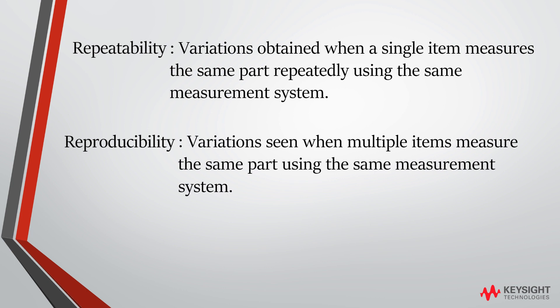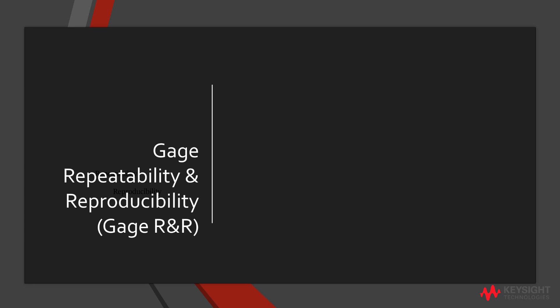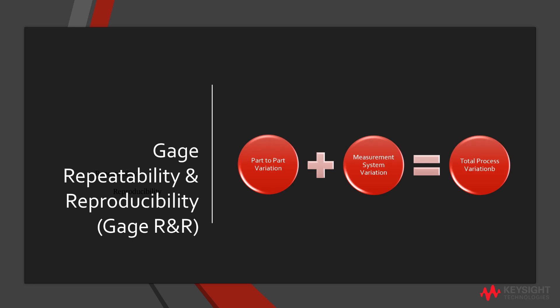To determine the measurement system error, Keysight PathWave Manufacturing Analytics uses gauge R&R, which is gauge repeatability and reproducibility. Gauge R&R estimates how much of the total process variation is caused by the measurement system.